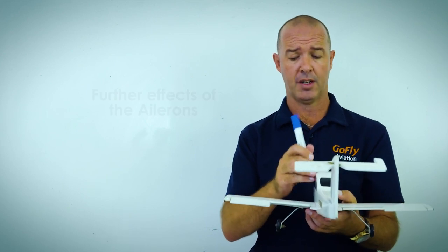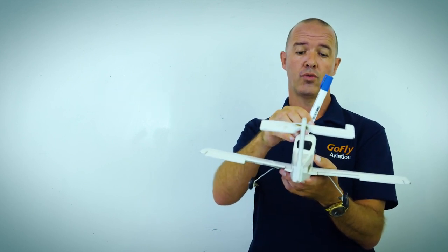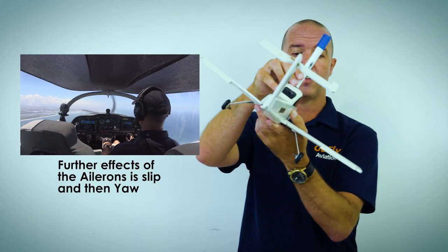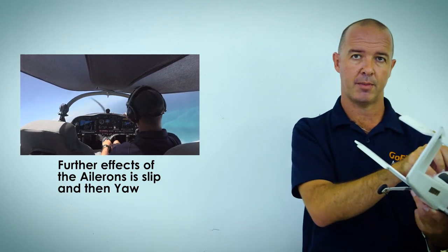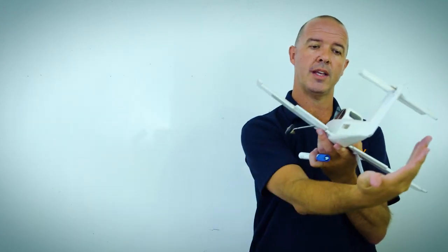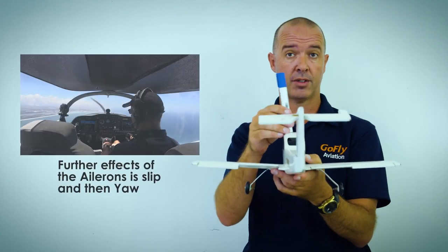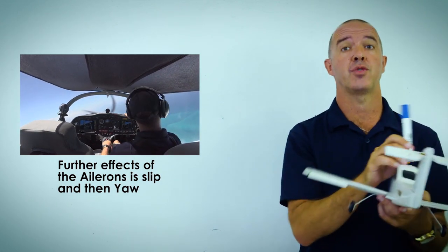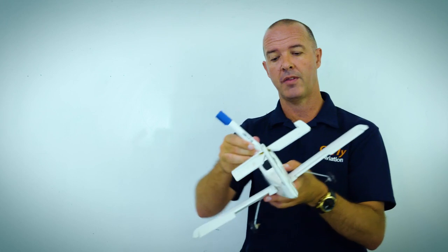Now we're going to look at the secondary effect of our ailerons. When I move the control column to the right, the primary effect is the aircraft rolls to the right. If I let go of the controls at that point, the aircraft will tend to slip down towards the lower wing, and then it will yaw in that direction. When we roll, gravity takes over, we start to slip, we have a lot of airflow hitting the back rudder area, and that tends to yaw the nose in that direction as well. So the secondary effect of roll is: roll, then slip, then yaw. The same happens if we roll to the left — we slip and yaw in that direction as well.